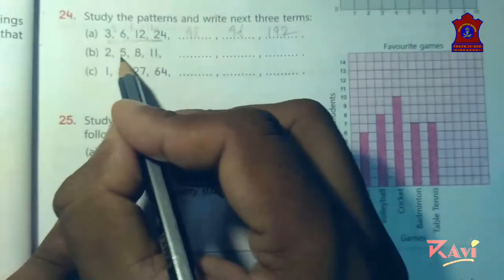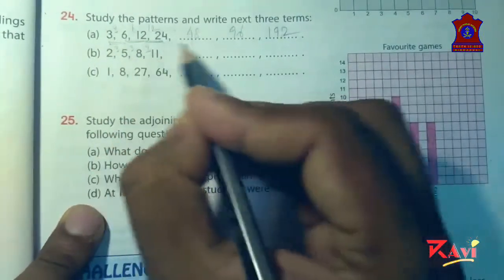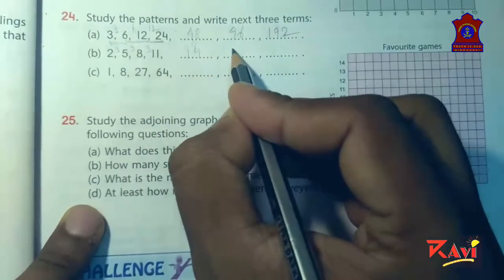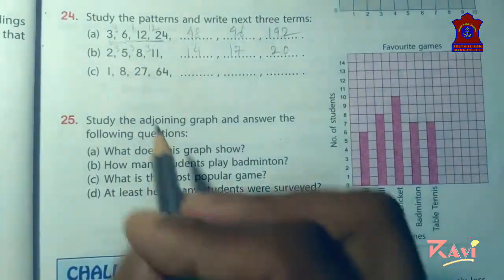Similarly, 2, 5, 8, 11 - differences of 3. So 11 plus 3 is 14, 14 plus 3 is 17, 17 plus 3 is 20. Like this.